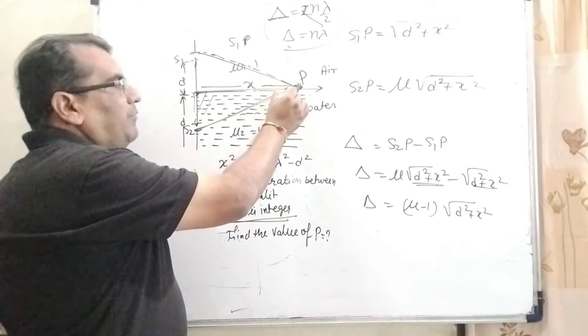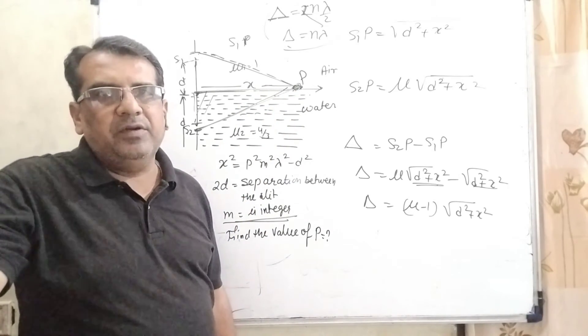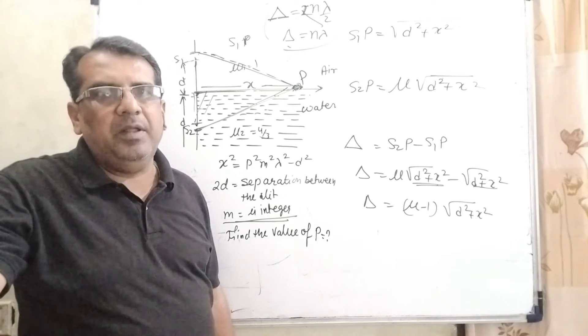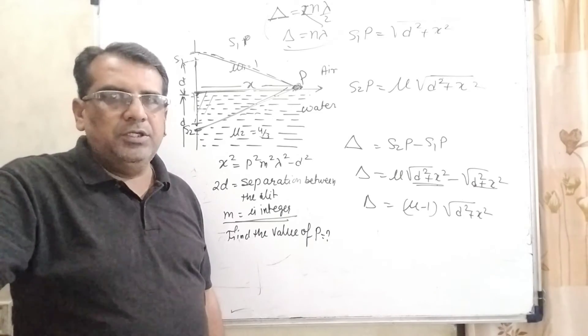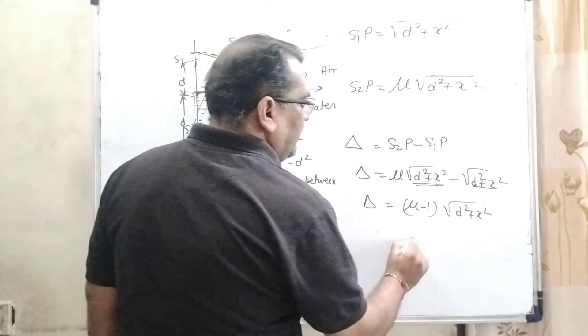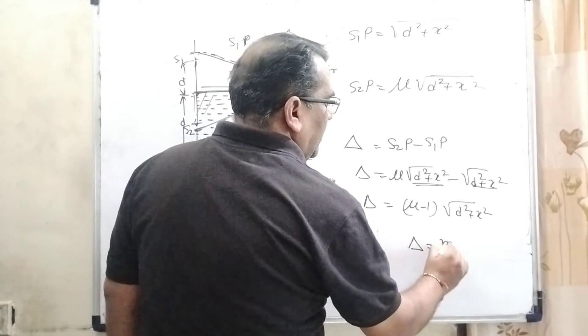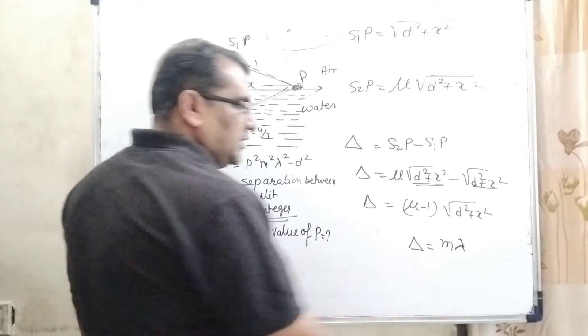I repeat: for maxima, path difference is an even multiple of λ/2. For minima, it's an odd multiple of λ/2. Using this concept, when path difference equals an even multiple of λ/2, the 2 cancels out, giving us mλ.